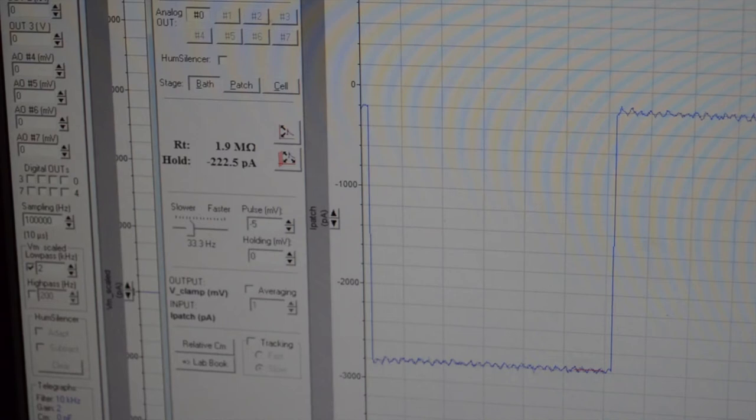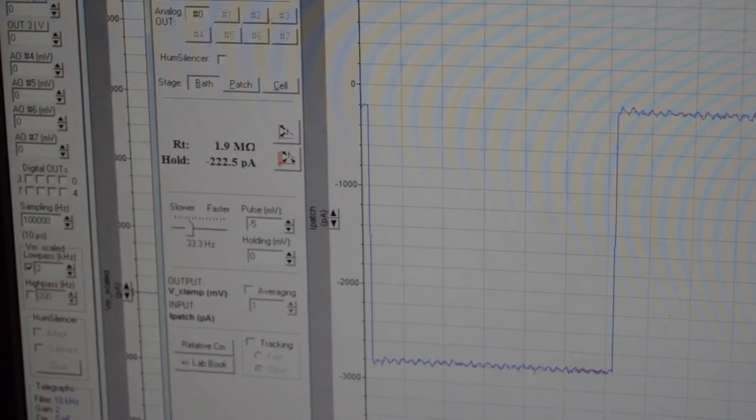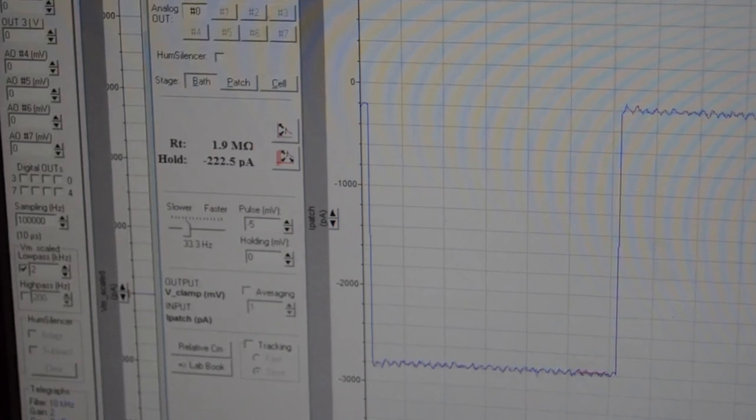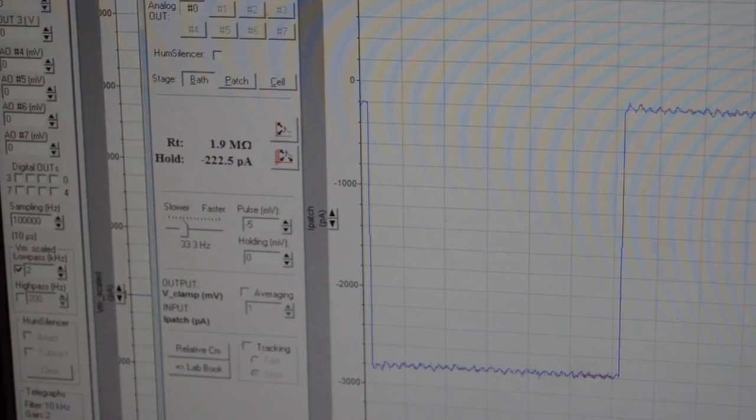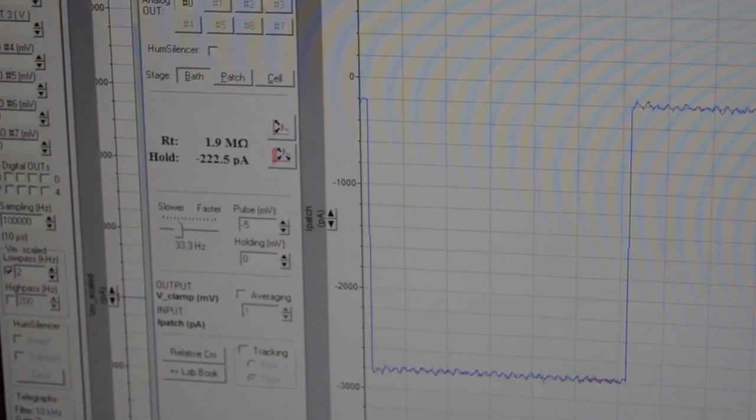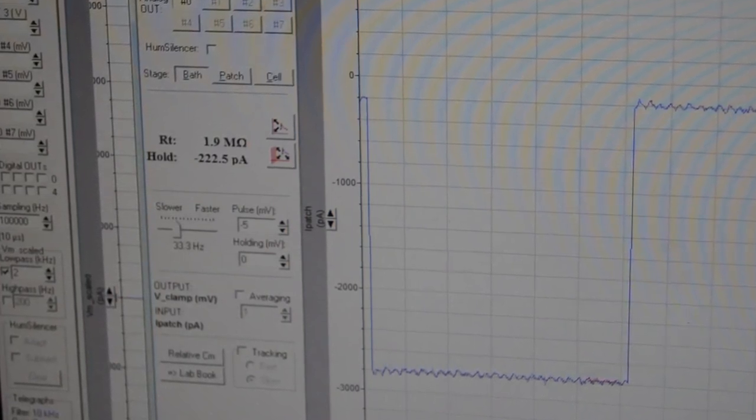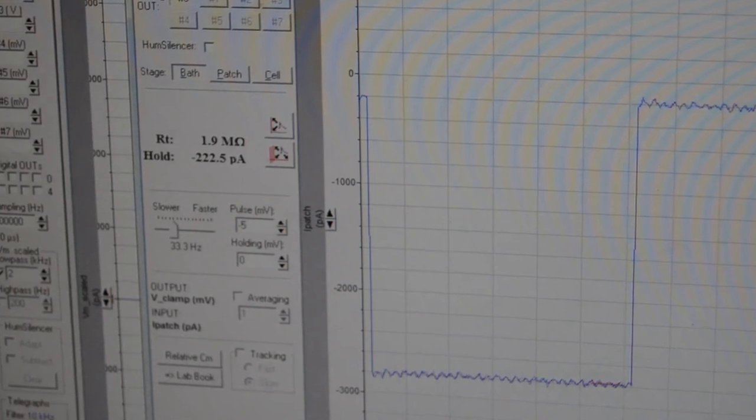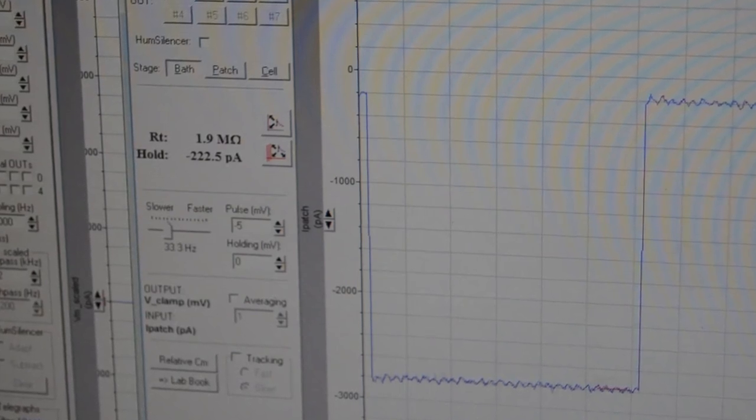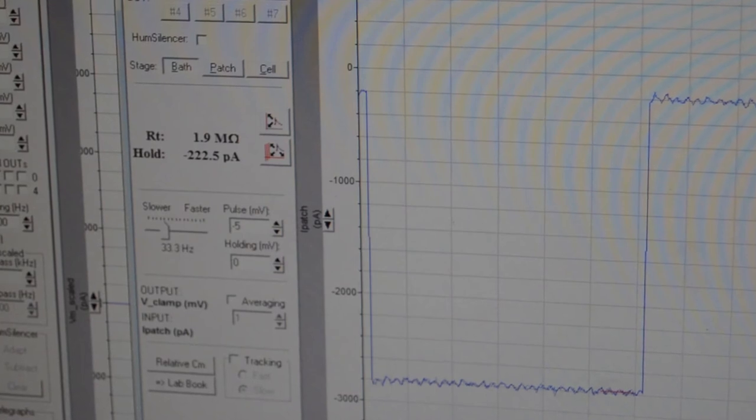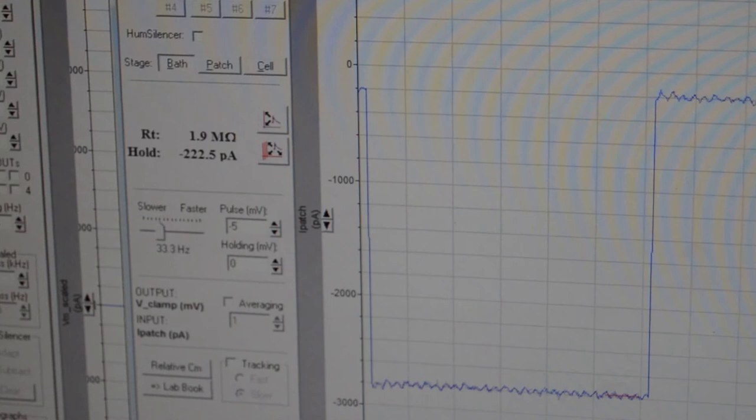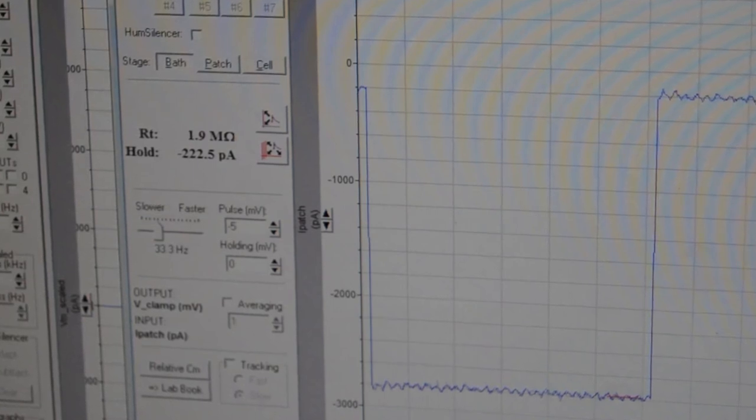What we see in this picture is an example of the tip resistance and current response when the glass recording pipette is in the bath solution prior to patching. We see a resistance of 1.9 mega-ohms and a large square current pulse. What might this suggest? Well, typically, for whole-cell patch clamp recordings, we actually want to use pipette tips with a resistance of 3 to 8 mega-ohms, as mentioned earlier. This means that we want our tips with a slightly smaller diameter, and this can be configured on the pipette pulling machine. With a higher tip resistance, less current can flow through the tip, and thus, a smaller current pulse will be noticed.